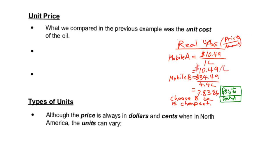For Mobil B, we're going to do the same thing. In this case, you're going to have $34.49. Remember, it was a big thing divided by 4.4 liters, its amount. And here is the best part. You end up with something that looks like this.